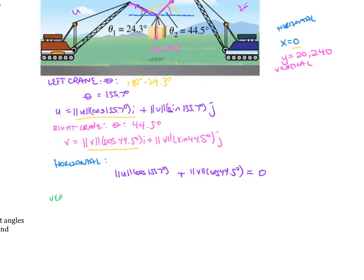Now we need to write our vertical in one line, and that's going to be here and here. Our vertical equals 20,240. So we're going to write the magnitude of U sine of 155.7 degrees plus the magnitude of V sine of 44.5 degrees equals zero. And we don't need to write the I's and J's. The I just tells that it's horizontal. The J's means it's our vertical. And I apologize, it doesn't equal zero. What does our vertical equal? Our vertical is 20,240.